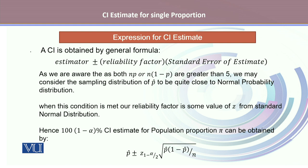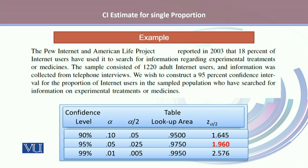When this condition is met, our reliability factor is a value of z from the standard normal distribution. Hence, the 100(1-α)% confidence interval estimate for population proportion pi is: p-hat plus or minus z(1-α/2), where the standard error is the square root of p-hat times (1-p-hat) divided by n, and z(1-α/2) is the reliability factor obtained from the standard normal distribution.